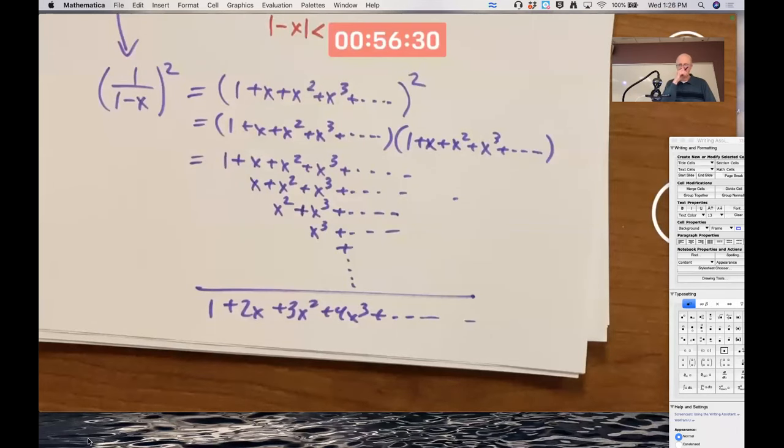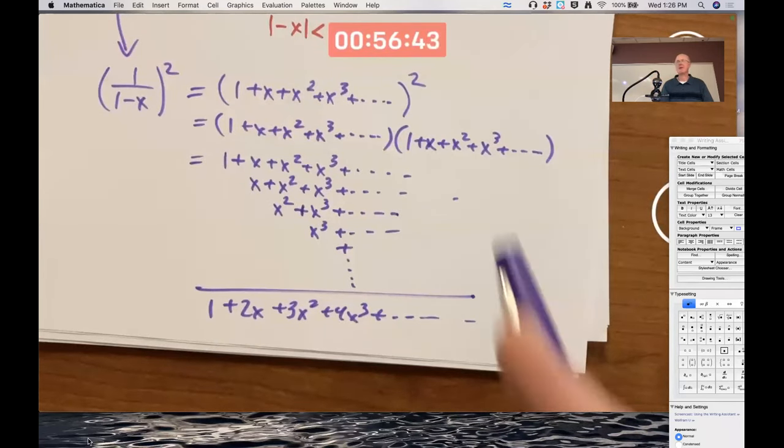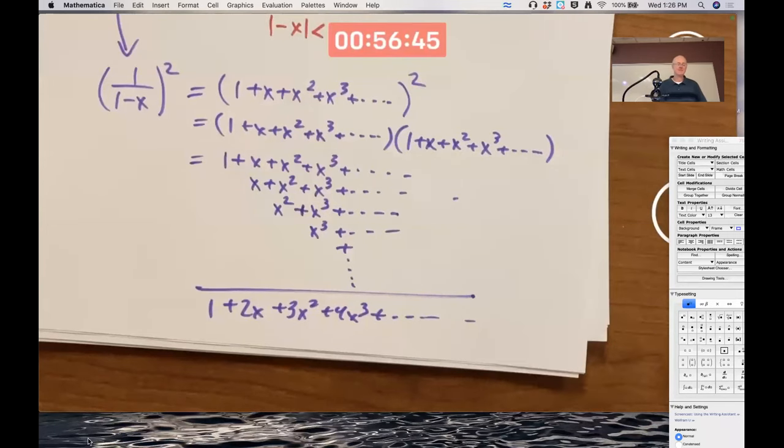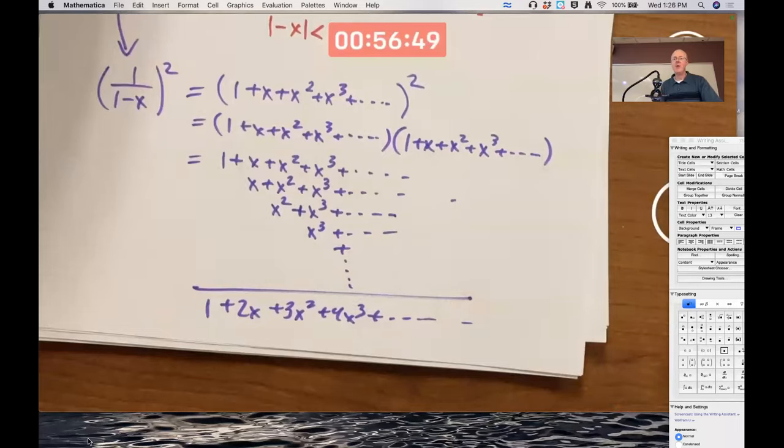Newton, Leibniz, Euler, Bernoulli, they all did this kind of stuff to their heart's delight, not worrying about whether it was rigorous or not, to tell you the truth. It was only made rigorous. So they lived in the 1600s and 1700s. This was only made rigorous in the 1800s. Let's do it one more way.